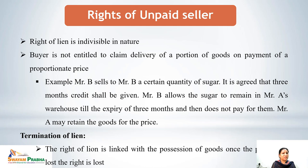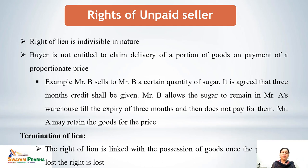The right of lien is indivisible in nature — the right of lien is over the complete portion of goods; it cannot be for proportionate goods. The buyer is not entitled to claim delivery of a portion of goods on payment of a proportionate price. For example, Mr. A sells to Mr. B a certain quantity of sugar with three months' credit. Mr. B allows the sugar to remain in Mr. A's warehouse until expiry of the three months and then does not pay. Mr. A may retain all the goods for the full price.